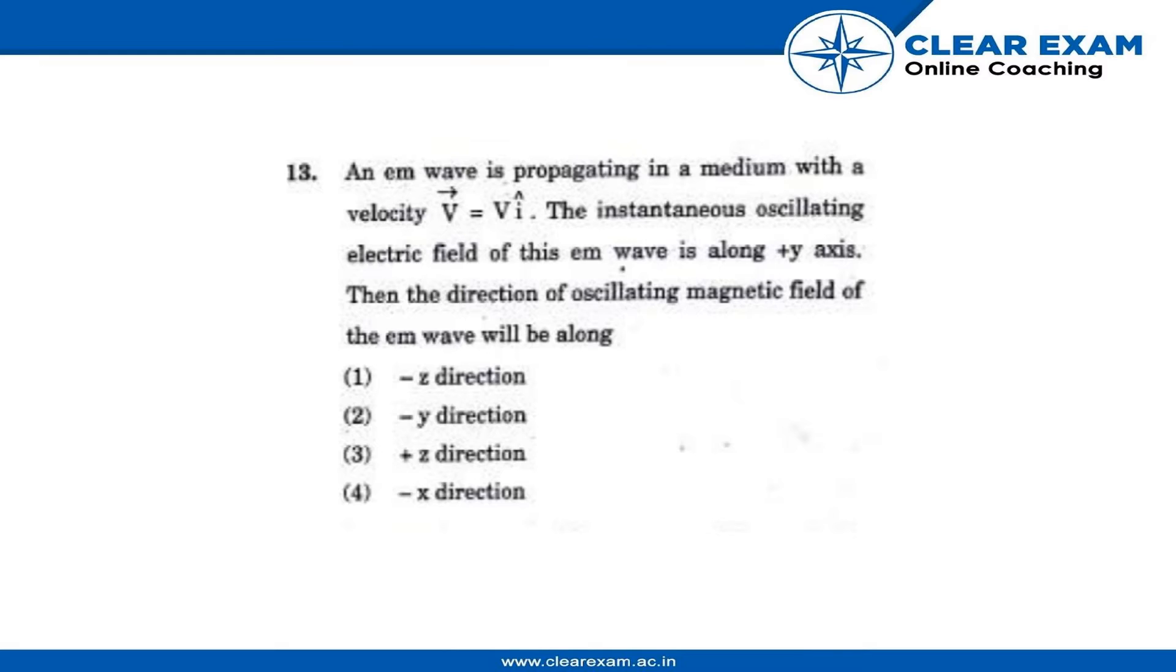Let's see what is given in the question. The propagating wave has velocity V vector = Vi, and the oscillating electric field is along the y-axis. We have to find out the direction of the oscillating magnetic field of this EM wave.